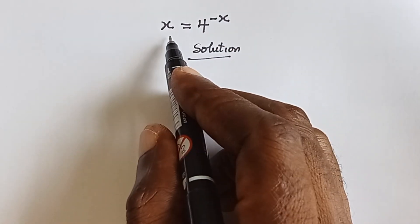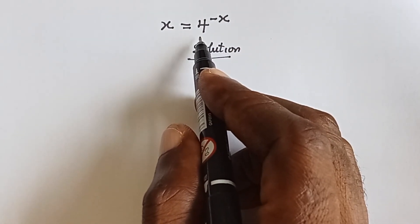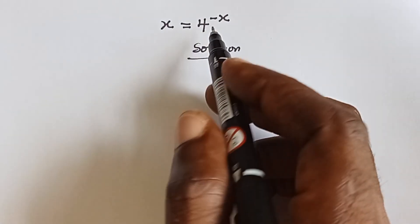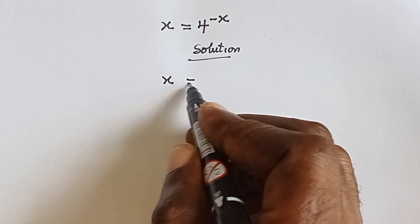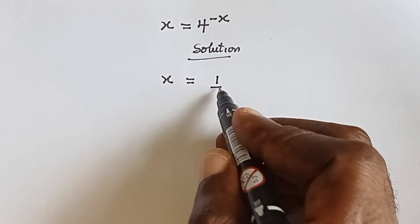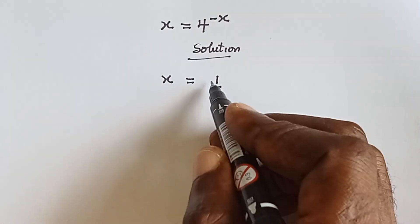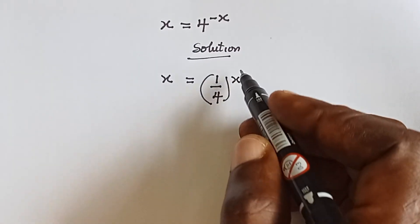So we have x equals to 4 raised to power minus x. That can also be written as 1 over 4 raised to power x.